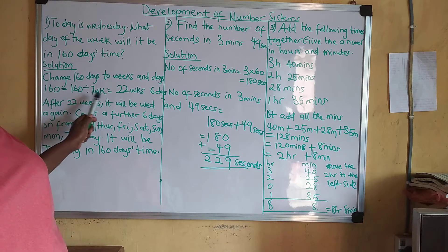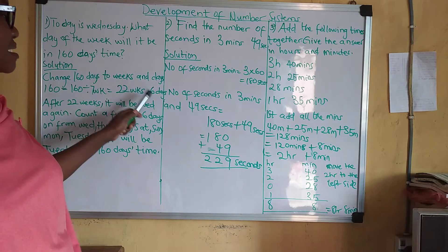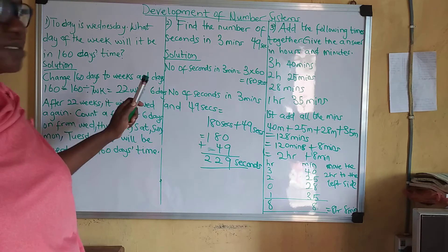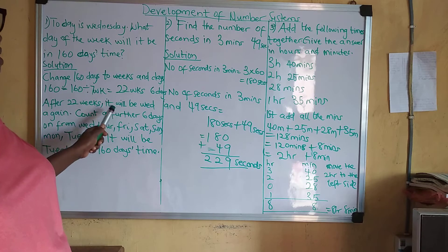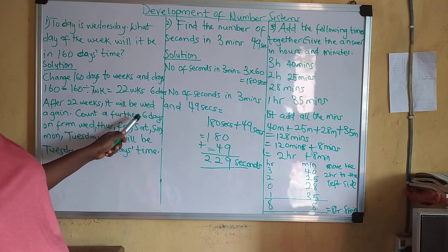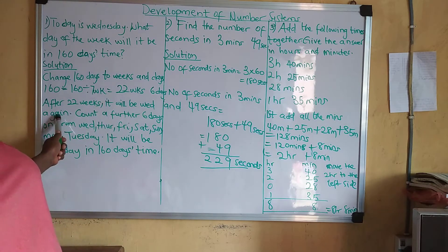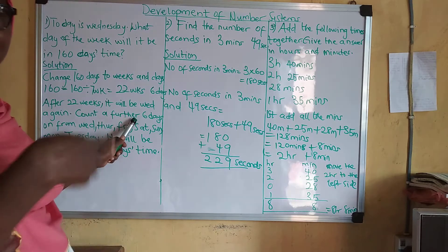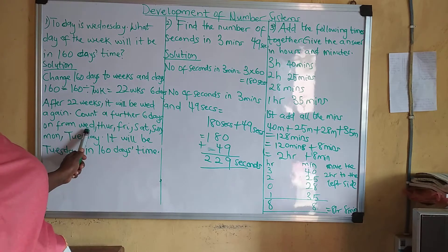160 divided by seven gives us 22 weeks remaining six days. Now, after 22 weeks, it will be Wednesday again after those 22 weeks. So you are going to count a further six days from that Wednesday.